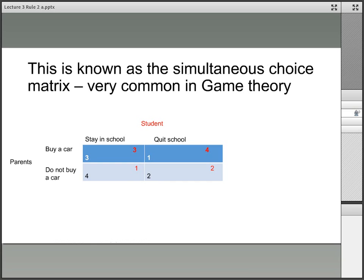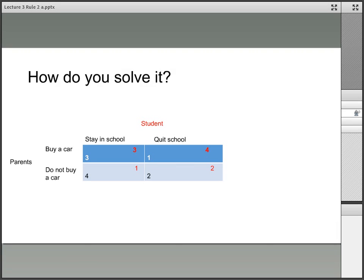Here I've put them into a matrix, which is very common in game theory. The question is: how do you decide these situations? If you're the student, how will the parent play? These are simultaneous games—you put your choices on the table at the same time. How do you solve it?